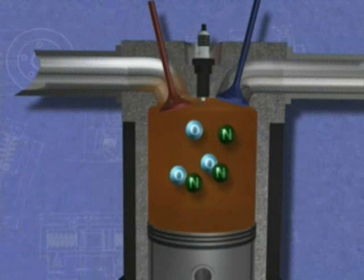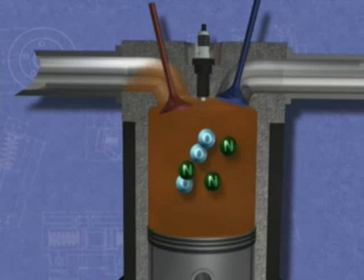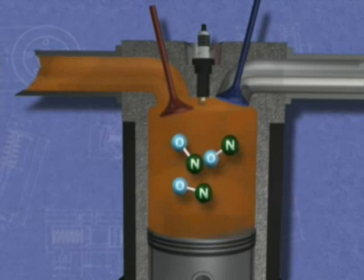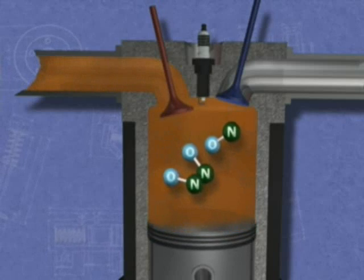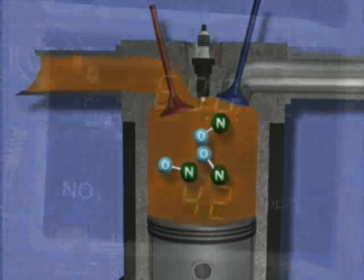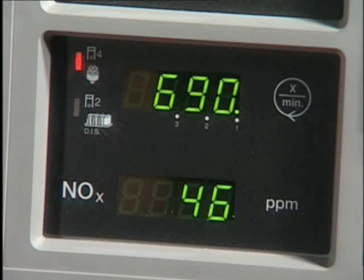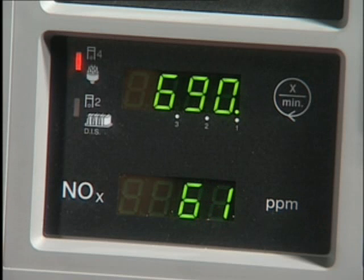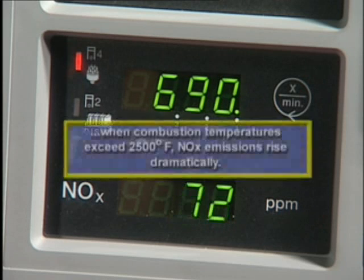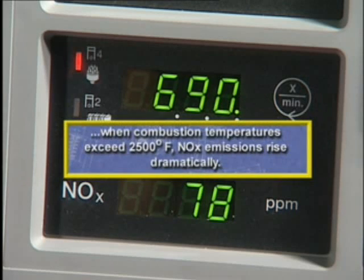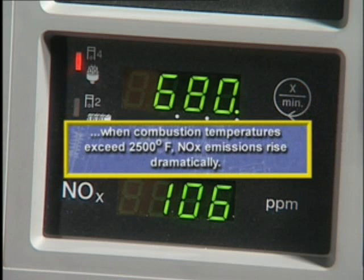CO can only be produced through combustion and is always the product of a rich mixture. Oxides of nitrogen, or NOx, develops when oxygen and nitrogen atoms combine under the heat of combustion. Like hydrocarbons, it's normal for the exhaust gas to contain some NOx. However, when combustion temperatures exceed 2500 degrees Fahrenheit, NOx emissions rise dramatically.